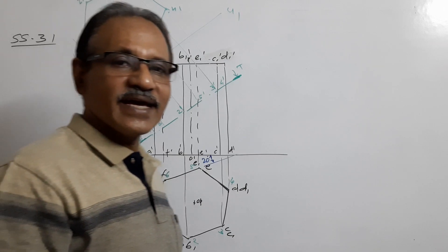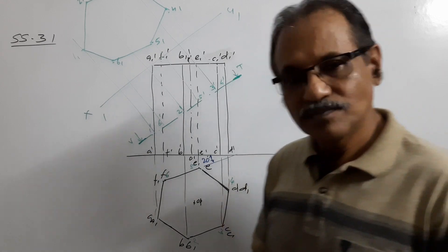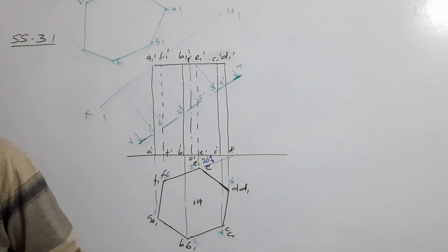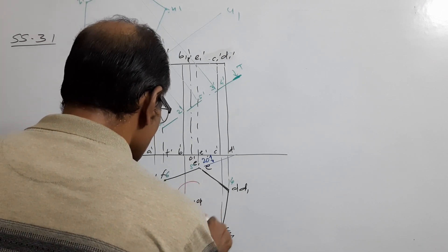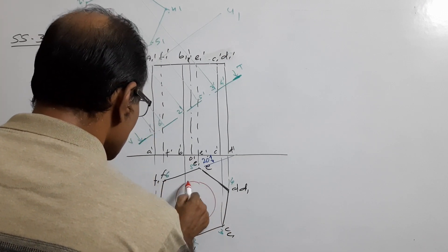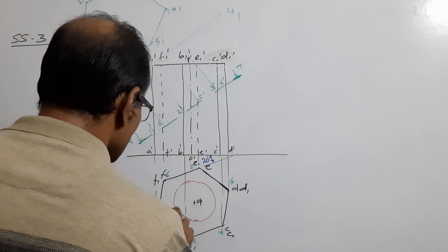Now say there is a hole inside. What is the plan of the hole? The plan of the hole is a circle. Draw the circle.